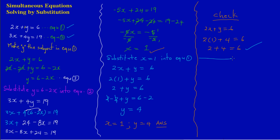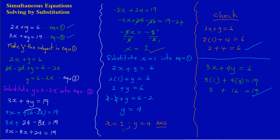Let's also try equation 2: 3x plus 4y equals 19. With x equals 1 and y equals 4: 3 times 1 is 3, plus 4 times 4 is 16, and 3 plus 16 equals 19. Both equations check out, confirming our solutions x equals 1 and y equals 4 are correct. Thank you and bye-bye!